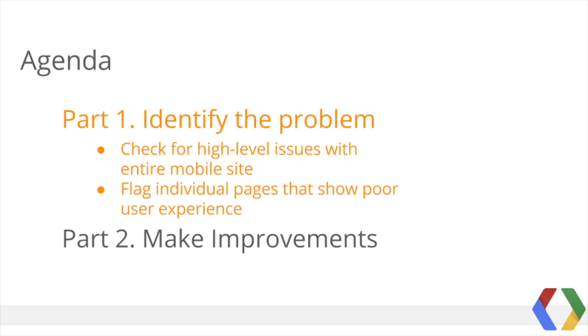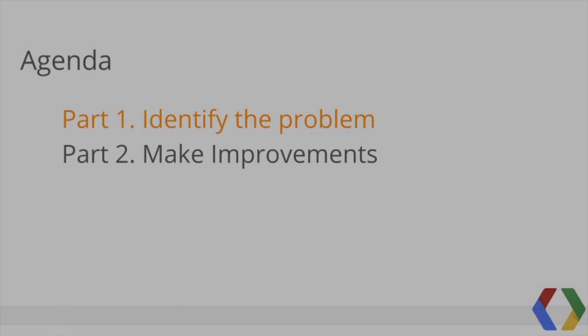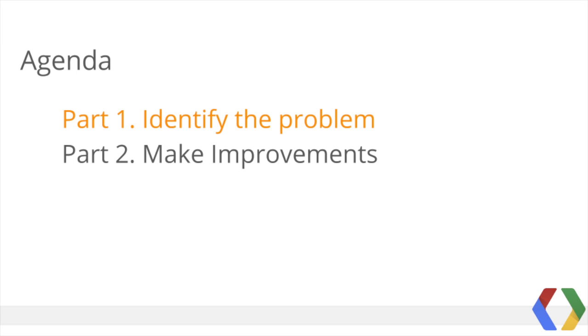Our process begins by identifying the problem: first checking for high-level issues with our mobile site, then looking to flag individual pages that show high traffic with a poor user experience. The last half of the video focuses on making improvements to those problematic pages. For the purpose of this video, I'm going to pretend that I manage the Google Store, an e-commerce site that sells Google goodies like YouTube t-shirts and Android figurines at www.googlestore.com. Using this site, we'll begin with identifying the problem.